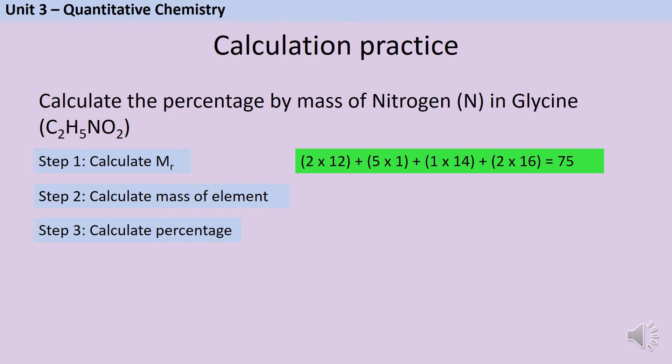Next I need to calculate the mass of just the nitrogen. Now here I only have one nitrogen atom so it's just one times 14, and then finally I work out the percentage by doing 14 divided by 75 times by 100 percent, and that gives me an answer of 18.7 percent. Glycine is 18.7 percent nitrogen.